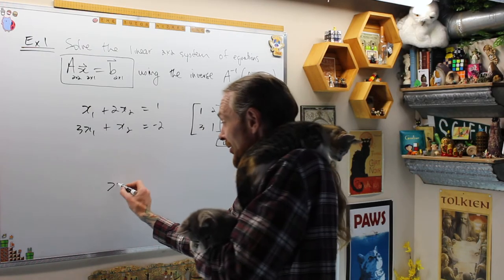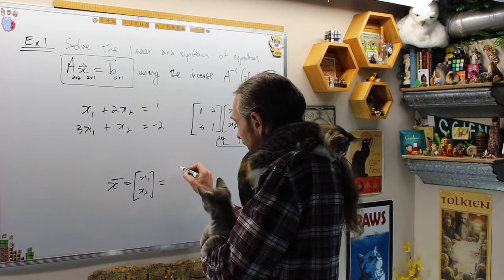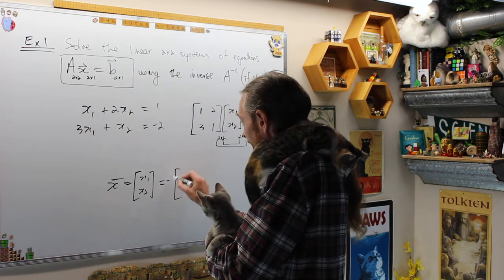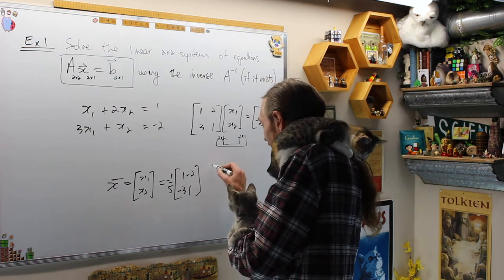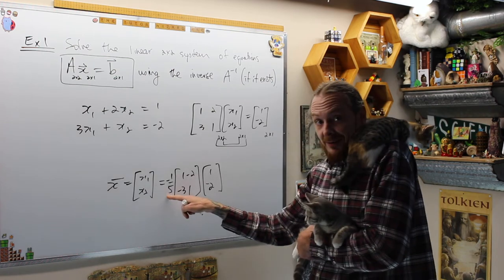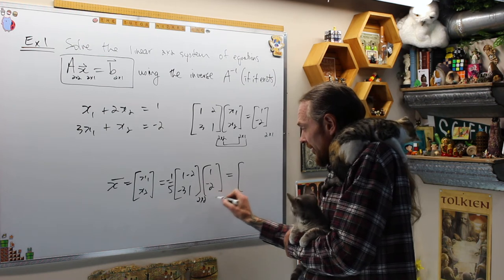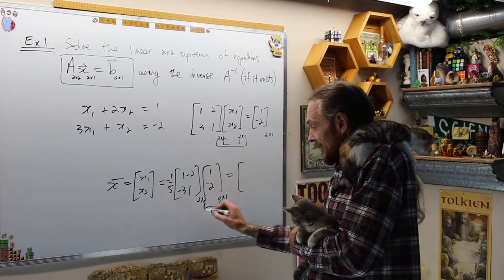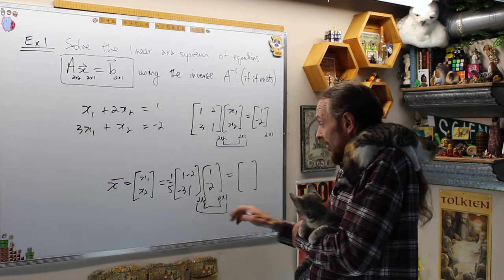What that says is our unique solution x, which is [x1, x2], is going to equal A inverse, which was negative 1 over 5 times [1, -2; -3, 1], times b, which is [1, -2]. This is why I left that on the outside. First do the integers and then multiply it on the inside. This is 2 by 2. This is 2 by 1. The inside indices match. Matrix multiplication is well-defined and the outcome will be 2 by 1.